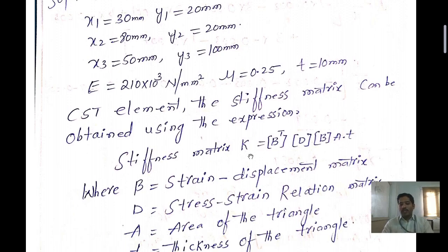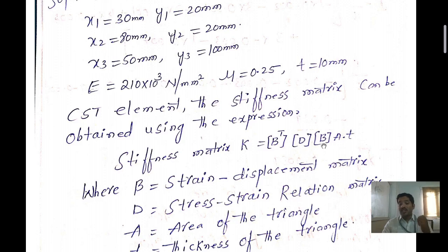The formula for the stiffness matrix is K equal to B transpose times D times B, multiplied by area A and thickness T. Here B is the strain-displacement matrix, D is the stress-strain relationship matrix, A is the area of the triangle, and T is the thickness of the element.